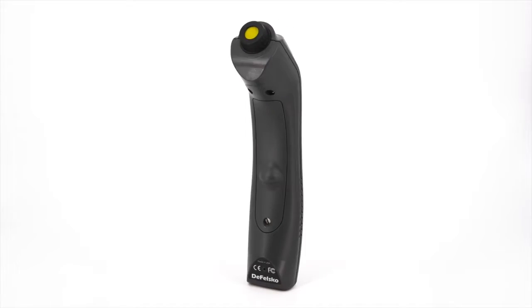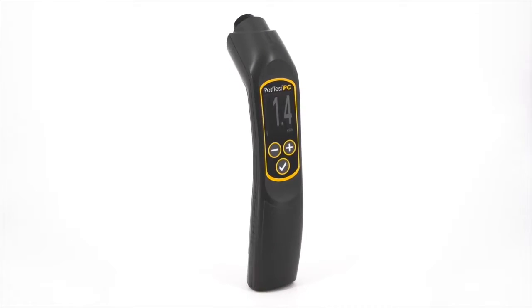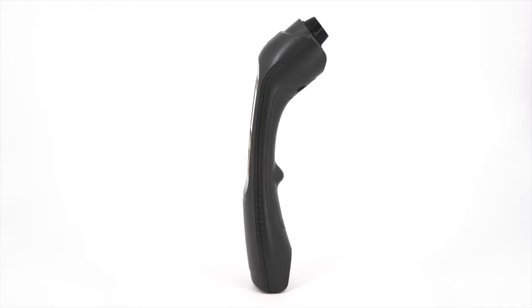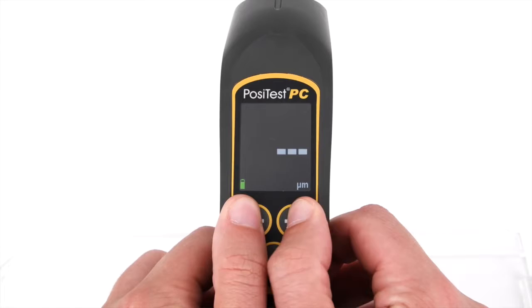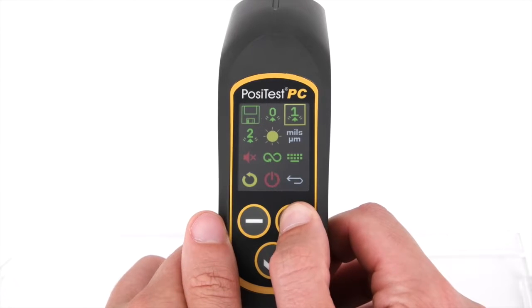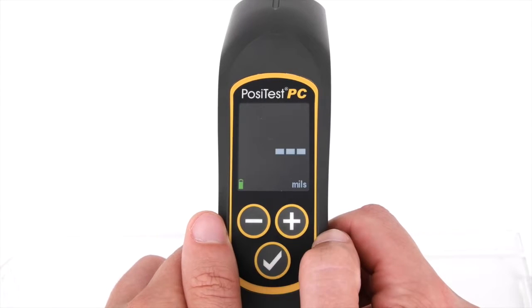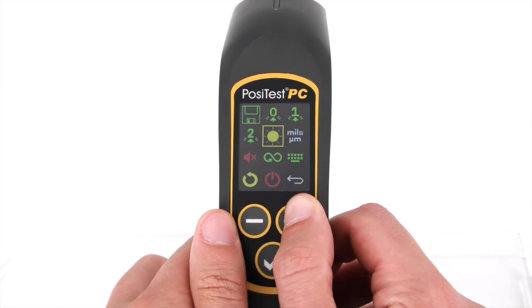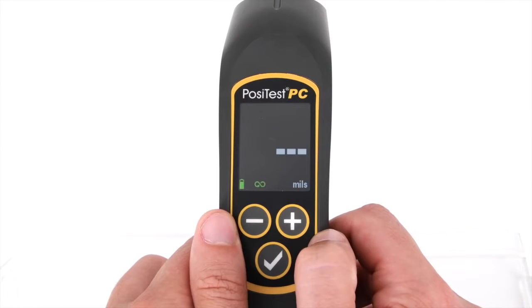In addition to its improved electronics, the PosiTest PC features an ergonomic unibody design with no cables or Bluetooth required. The new icon-based color interface makes operation easy. Best of all, it can be purchased for significantly less than the previous generation model.